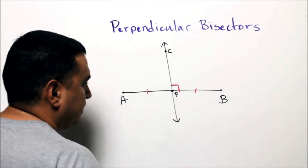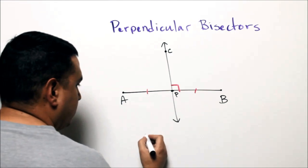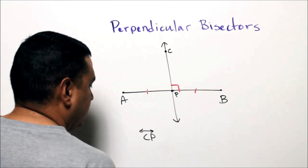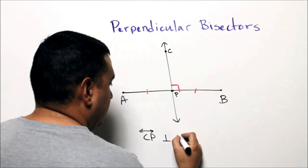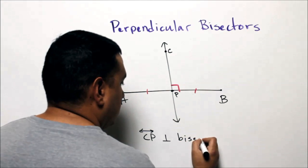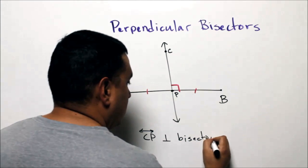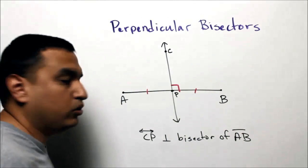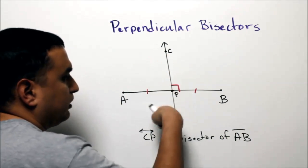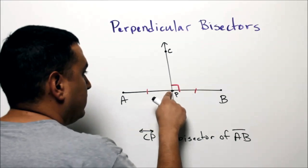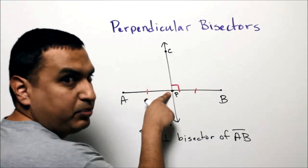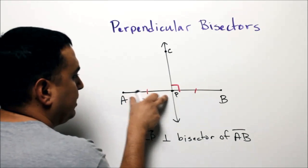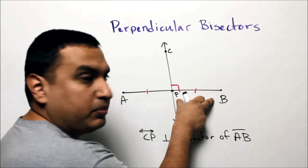In this case I drew a line. If you see something like this, CP is the perpendicular bisector of segment AB. You should know that they intersect at 90 degrees, this intersection point is the midpoint, and segment AP is congruent to segment BP.